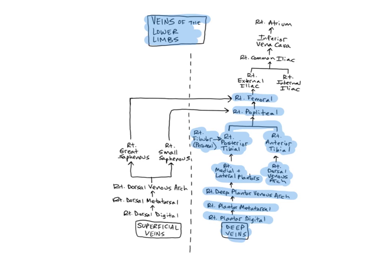The femoral veins are deep continuations of the popliteal veins, just superior to the knee. They ascend deep to the sartorius muscle of the thigh. Femoral refers to the femur, or the thigh bone, and they emerge at the proximal end of the thigh, then enter into the abdominopelvic region to become the external iliac veins. The femorals drain the skin, lymph nodes, muscles, and bones of the thigh, as well as the external genitals.